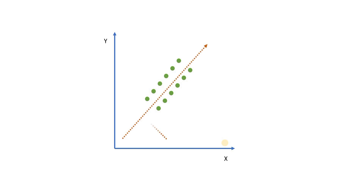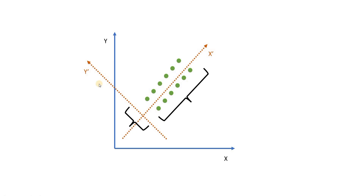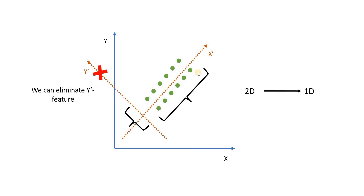What PCA does here is plot a new secondary dimension — the principal component — where the projection of the data along this new dimension is very large, and the projection along the perpendicular dimension is very small. In this case we can eliminate the smaller dimension and keep only one. So we have again reduced 2D to 1D. The key is finding a new principal component axis that represents the most data.